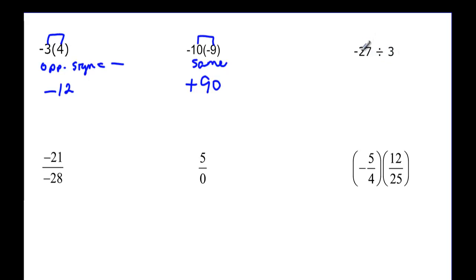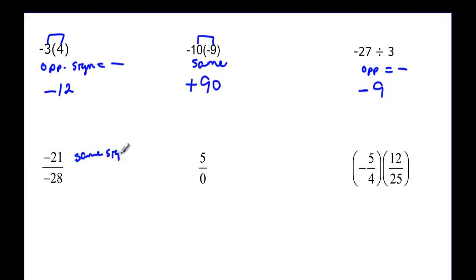How about this one? A negative divided by a positive — opposite signs — so that's going to mean that our answer is negative. And 27 divided by 3 is 9, so the answer is negative 9. We have the same signs here, so we know we are going to have a positive answer. And this is tricky — you find this a lot when solving equations, so you want to remember this one.